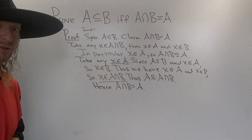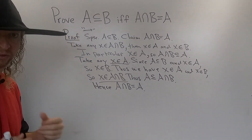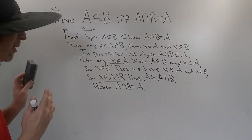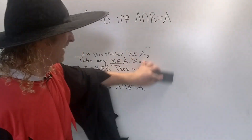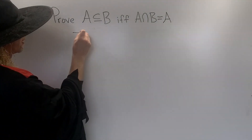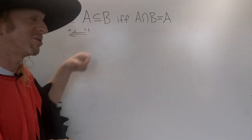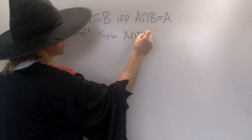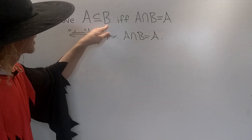That proves the first direction: if A ⊆ B then A ∩ B = A. Now let's erase and prove the other direction. Now suppose A ∩ B = A, and we have to show A is a subset of B.